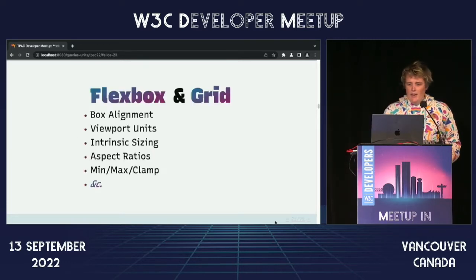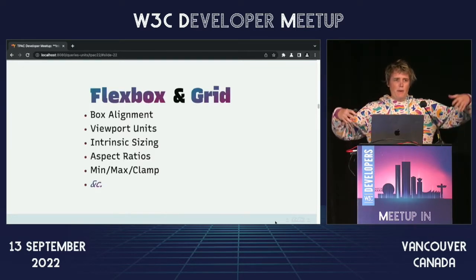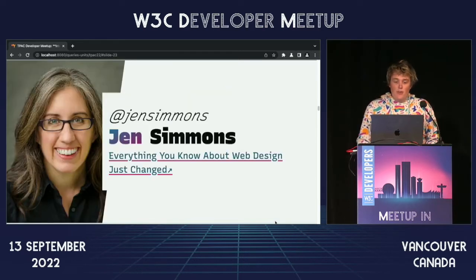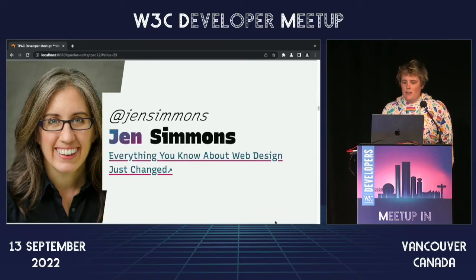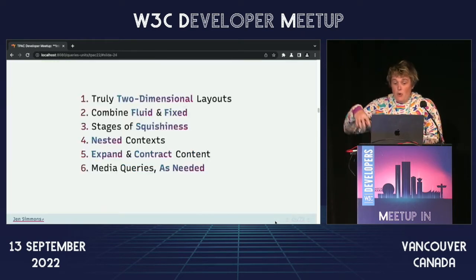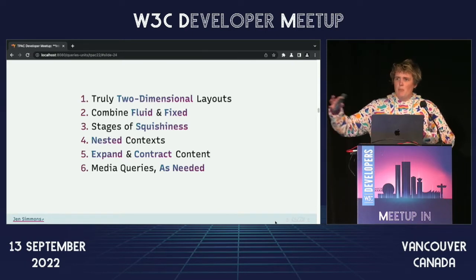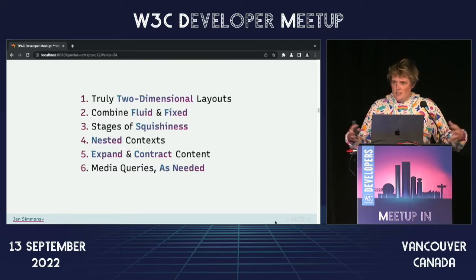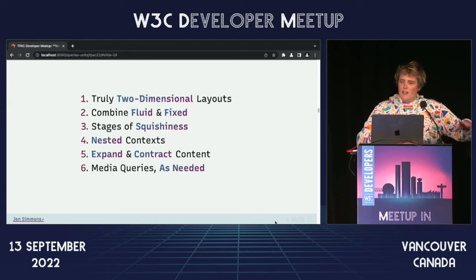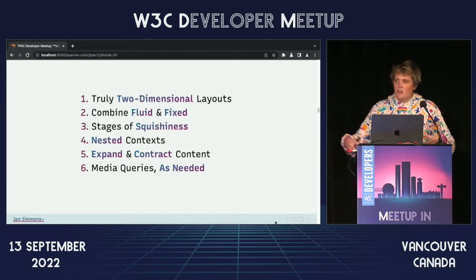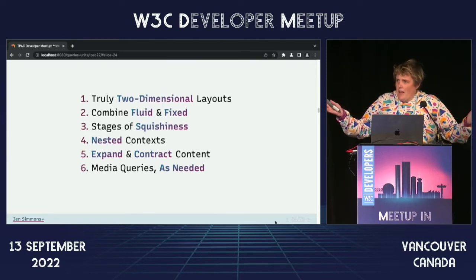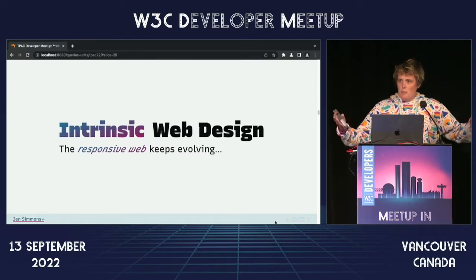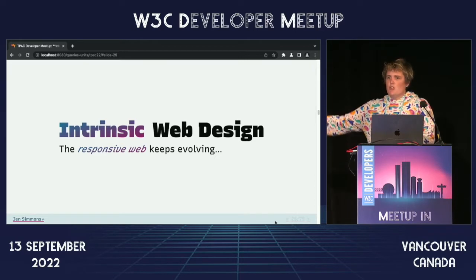Fast forward another decade and everything has changed again. We've got flexbox, grid, box alignment, viewport units, intrinsic sizing, aspect ratios, min, max, and clamp. Everything has fundamentally changed about how we do web design. As Jen Simmons points out, we can now do truly two-dimensional layouts. We can combine fluid with flexible. We don't have to pull out all the intrinsic sizes. We get all these different stages of squishiness — nested contexts that expand and contract their content with media queries maybe as needed. She's calling this intrinsic web design.